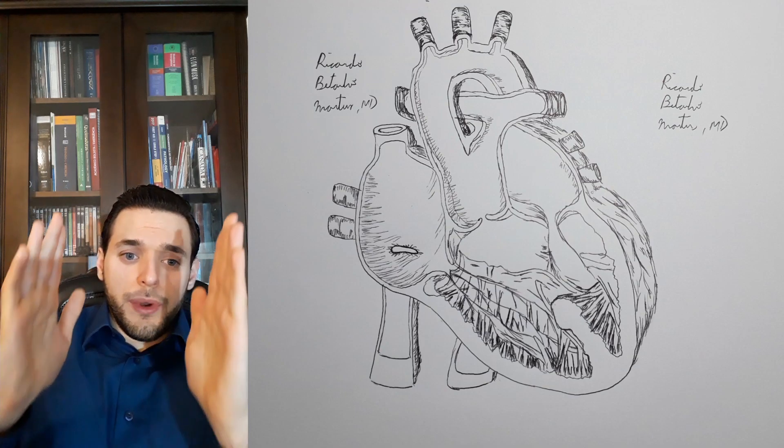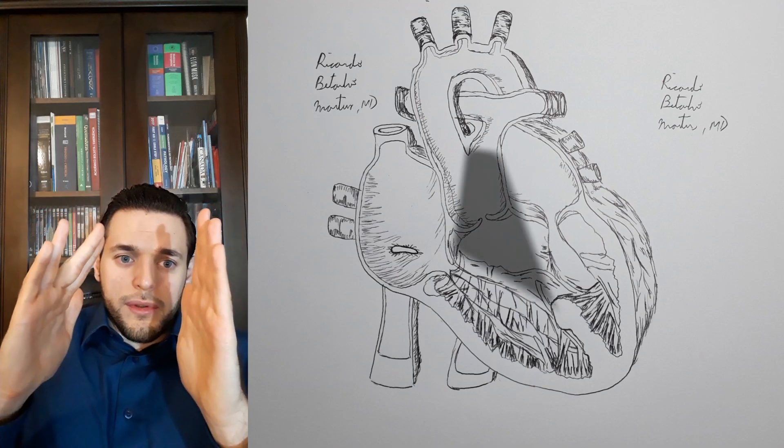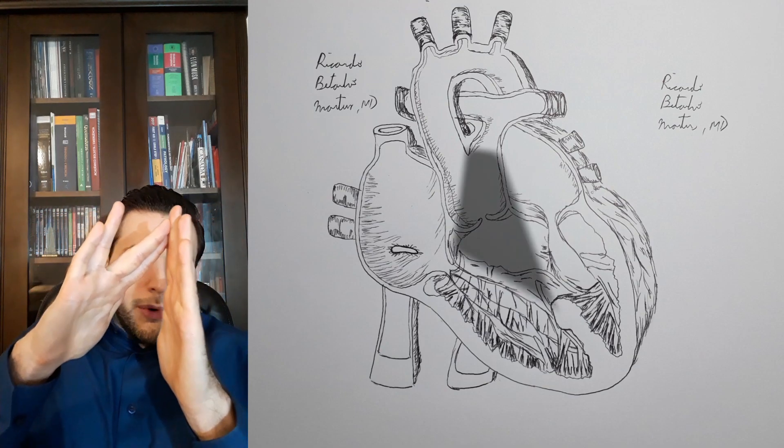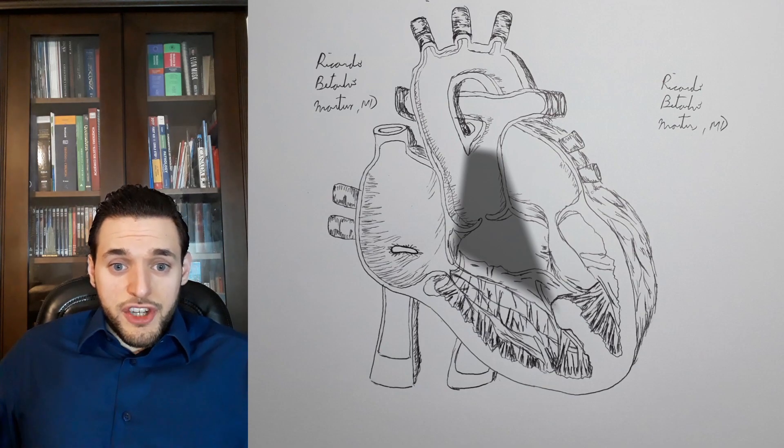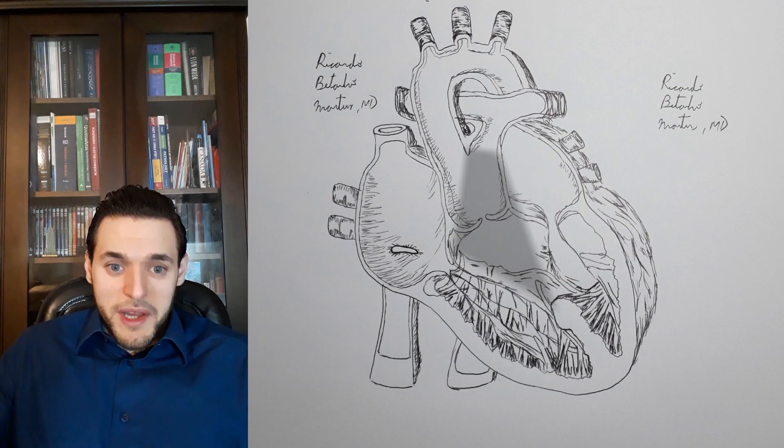However, with surgery to reconstruct the right ventricular outflow tract, prognosis is generally good, although it usually entails re-operations as the child grows and needs to have the conduit replaced.